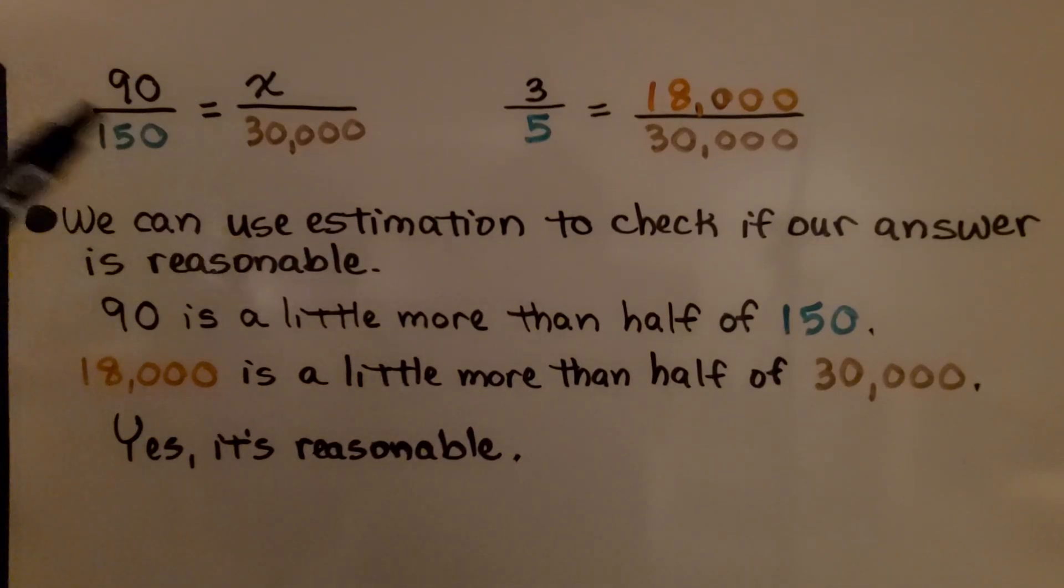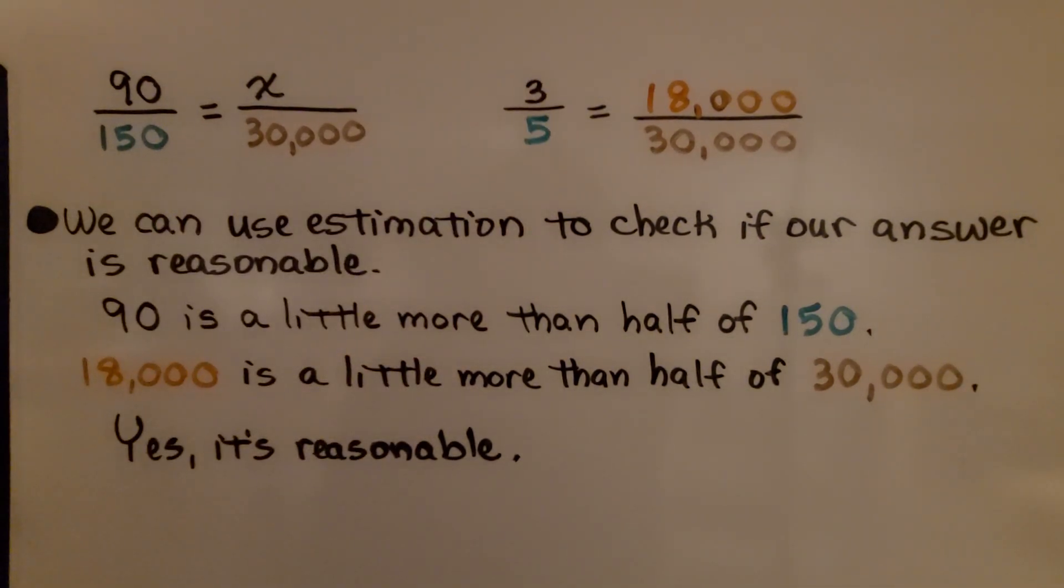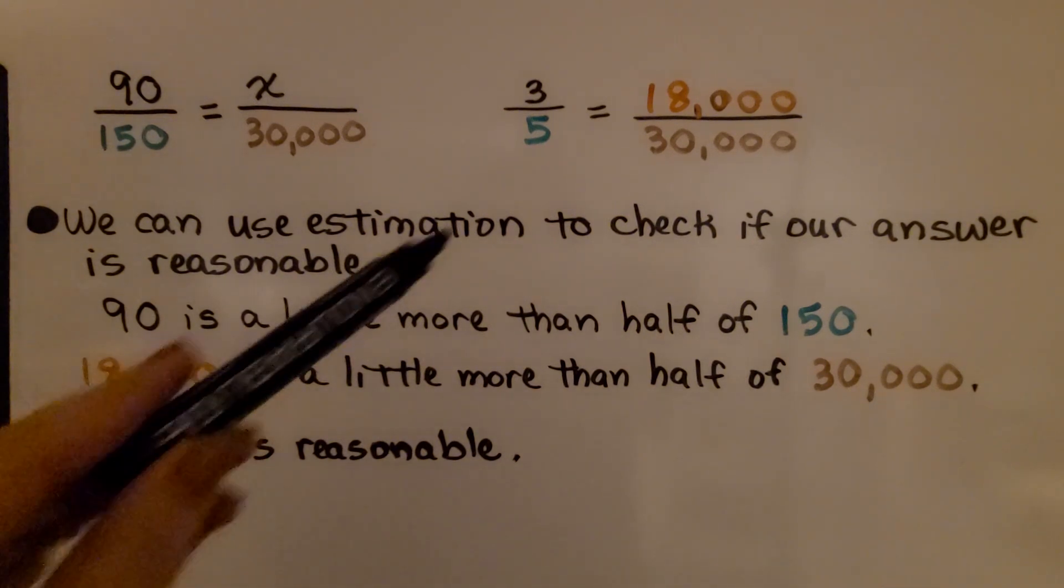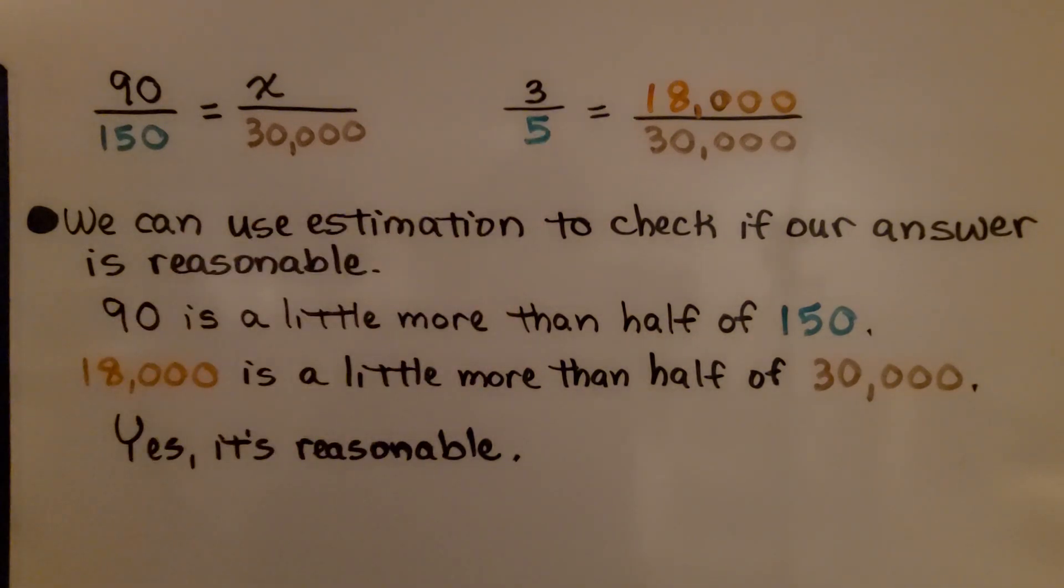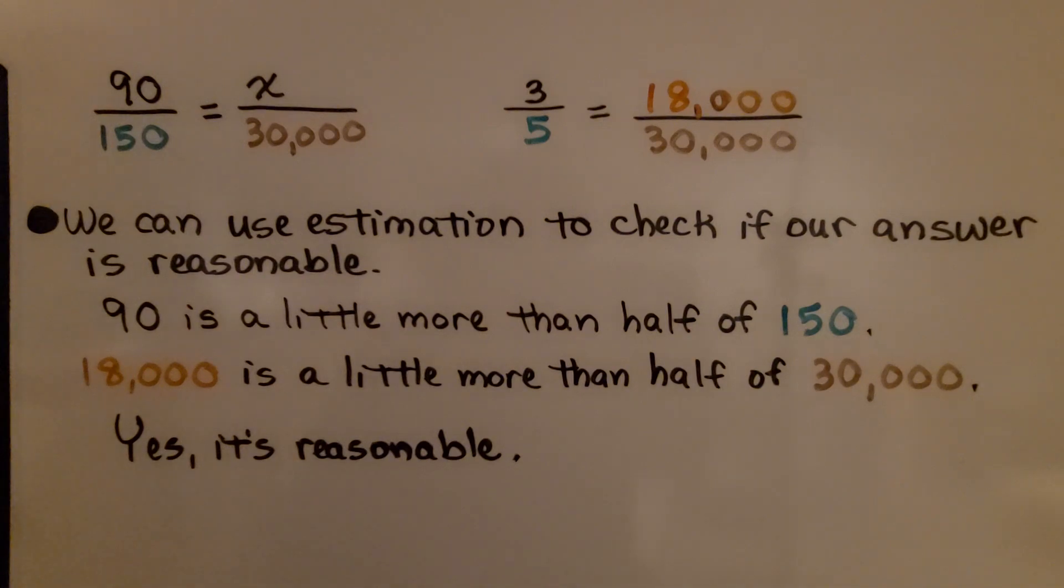We found that Candidate A got about 18,000 votes. We can use estimation to check if our answer is reasonable. Ninety is a little more than half of 150, and 18,000 is a little more than half of 30,000, so yes, it's reasonable. This is a quantitative inference. We discussed earlier in the other videos about a qualitative inference. This has to do with quantity, so it's a quantitative inference.